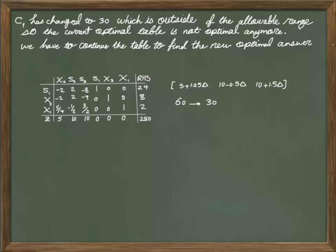We went from 60 to 30, so our delta is negative 30. I replace delta into these terms and find a new coefficient for the row of Z. If I do that replacement, putting delta as negative 30, these are the new values that I get for my non-basic variables.